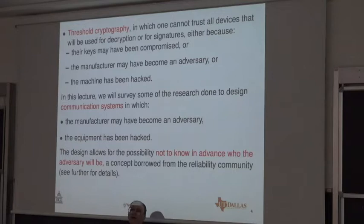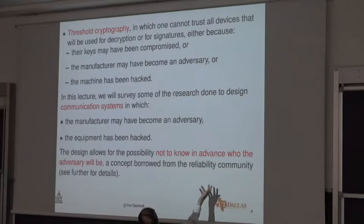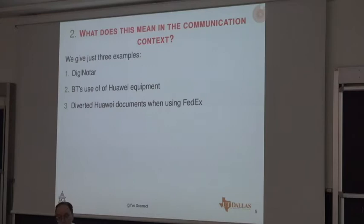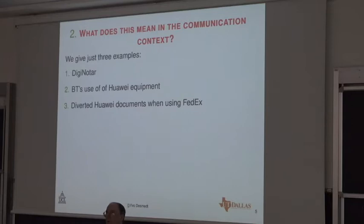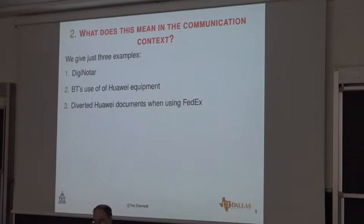If you don't know in advance what part is going to fail, you don't know in advance who your adversary is going to be. What does this mean in the communication context? I'll give three examples: DigiNOTAR, BT's use of Huawei equipment, and diverted Huawei documents sent via FedEx. What lies behind all this? It's basically graph theory. The graph may represent different things — what you could consider as communication in which you send data, but also virtual communication, as in the case of PKI.